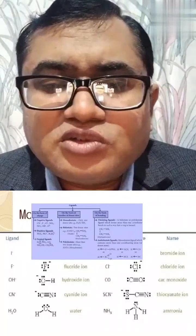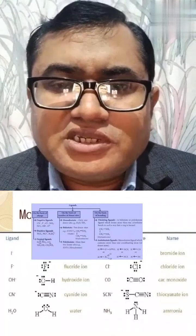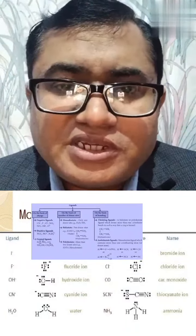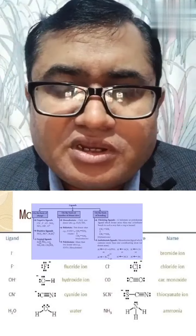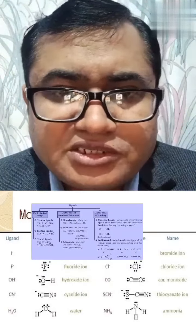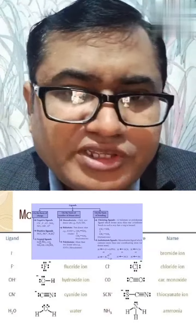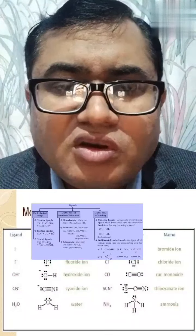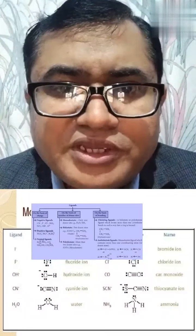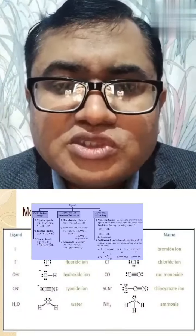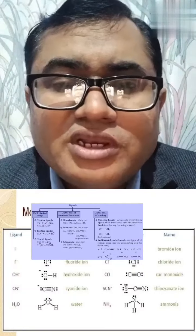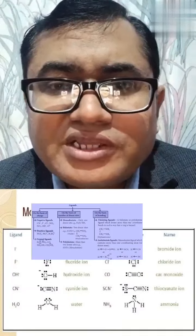Ligands are those species in a coordination compound in which a negative charge is present, or a neutral atom — these are called ligands. Ligands are also known as Lewis bases because they are electron pair donors; they donate a lone pair or two electrons to the central metal atom for the formation of a coordination bond. Ligands like CO, NH3, and H2O are neutral ligands.